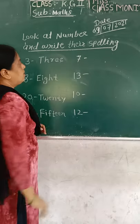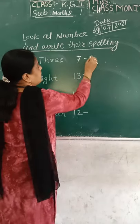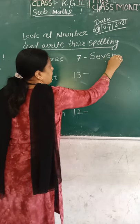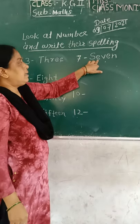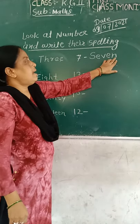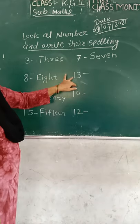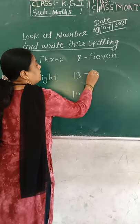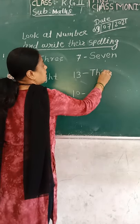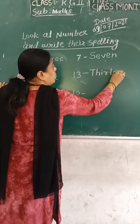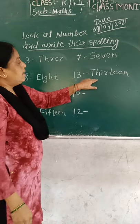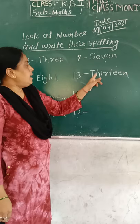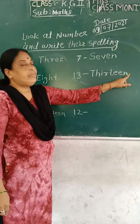Number seven. Seven. Seven spelling: S-E-V-E-N. Seven. S-E-V-E-N. Seven. Okay. Now it will be thirteen. Thirteen. T-H-I-R-T-E-E-N. Thirteen.